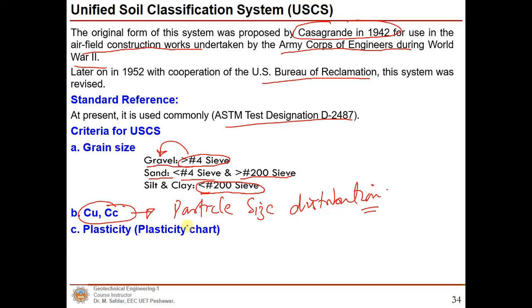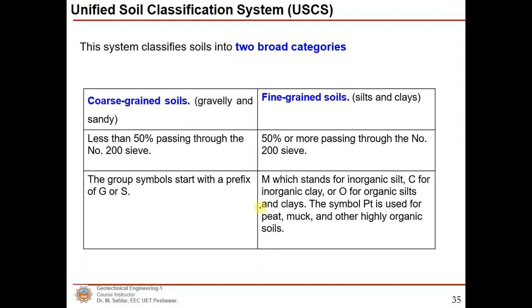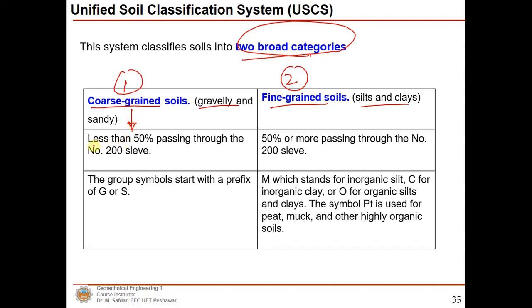The plasticity chart is also needed in order to classify soils using the Unified Soil Classification System. This system classifies soils into two broad categories: the first is coarse-grained soils and the second is fine-grained soils. Coarse-grained soils are gravelly and sandy soils, and fine-grained soils are silts and clays. For coarse-grained soils, if less than 50 percent passes through the No. 200 sieve, those particles are coarse-grained material. If 50 percent or more of the sample passes, that soil is fine-grained.